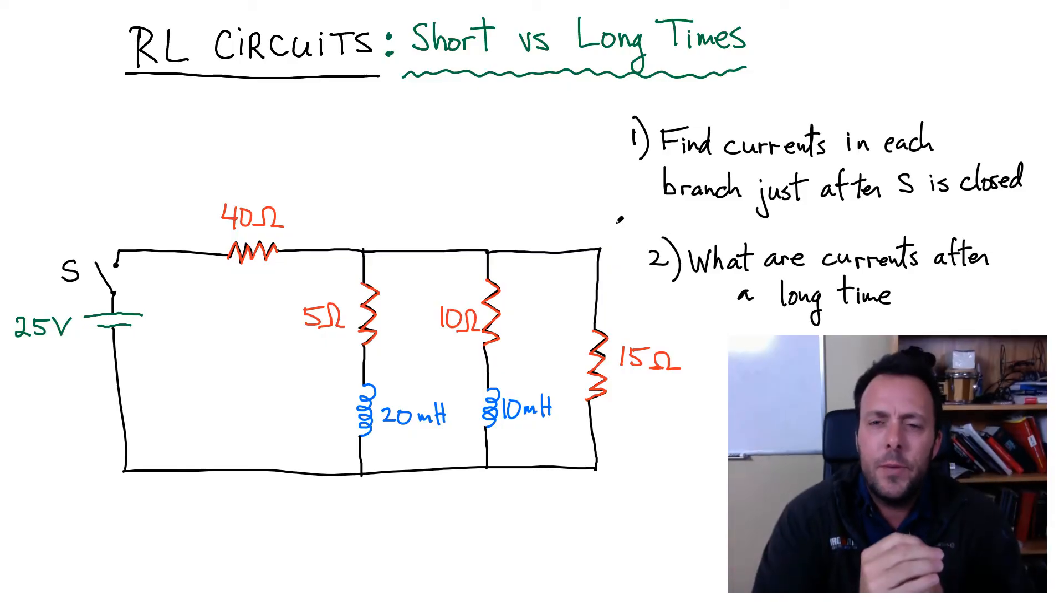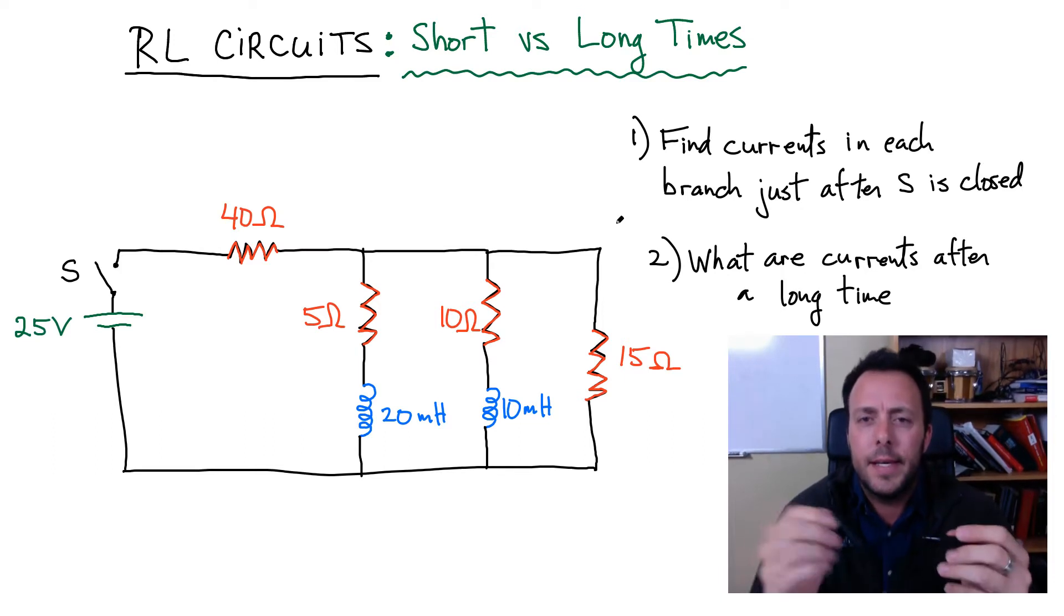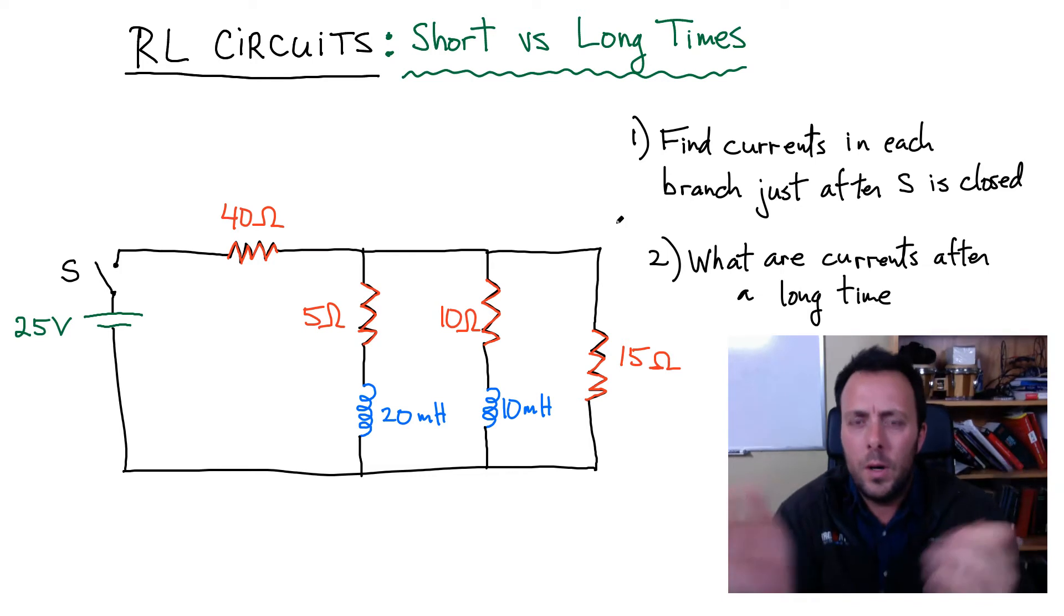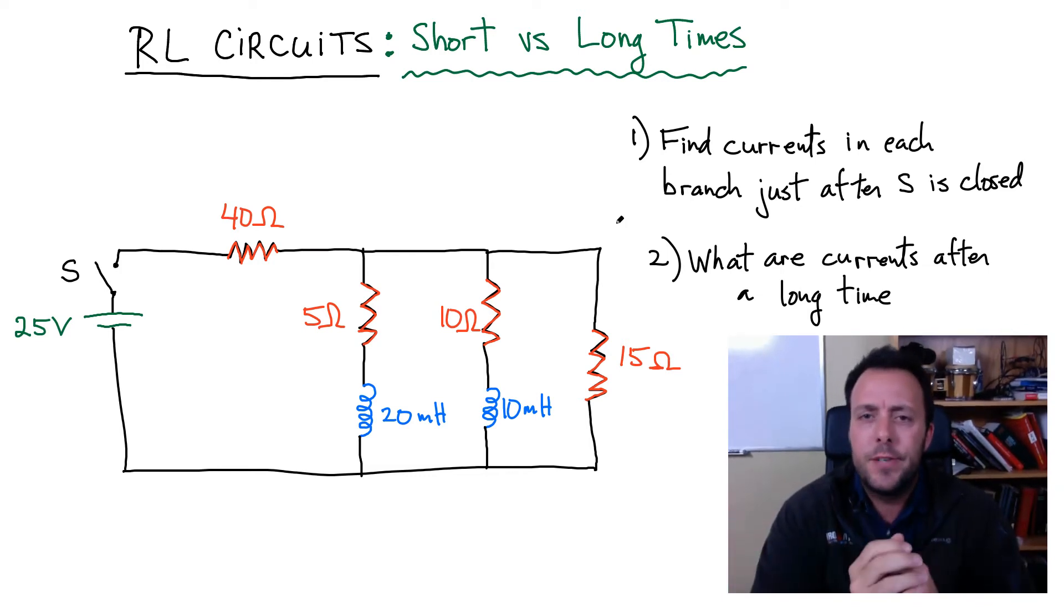Hi everyone, PhysicsNinja here. Today I want to look at RL circuits in two limiting cases. One case when you first close the switch, what happens, what's the current in each branch of any RL circuit. I drew one particularly complicated one here on the board, but it could be anything.